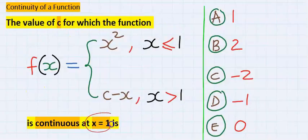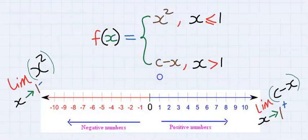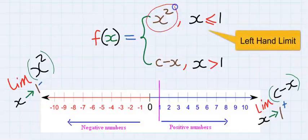At x equal to 1, consider the number line at x equal to 1. The upper part is known as left hand limit.